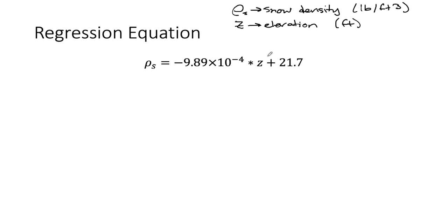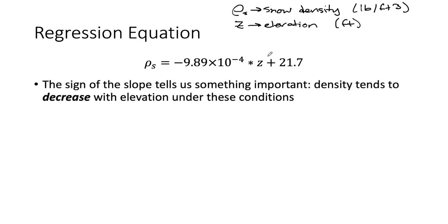So let's go through and let's look at some really important things about this equation. So the first thing that we want to look at is the sign of the slope. So if we look at the sign here, in this case, it is negative. And the significance of the negative sign is that it tells us the direction of the relationship between elevation and snow density. And specifically it tells us that the snow density tends to decrease as we increase elevation, at least on this particular day in which we got the data in Idaho for these conditions.